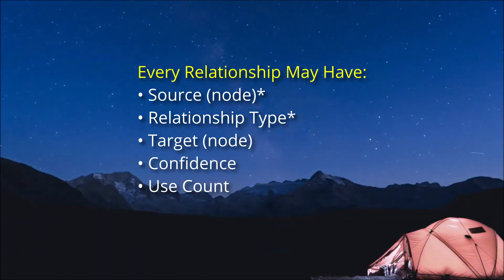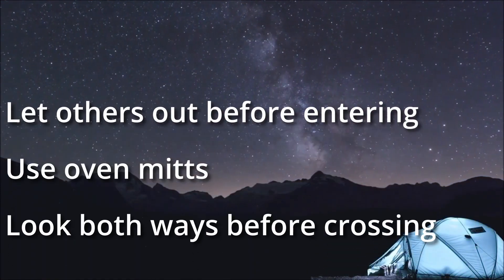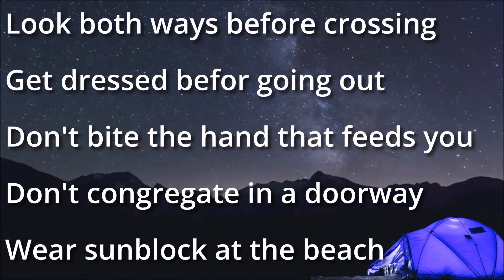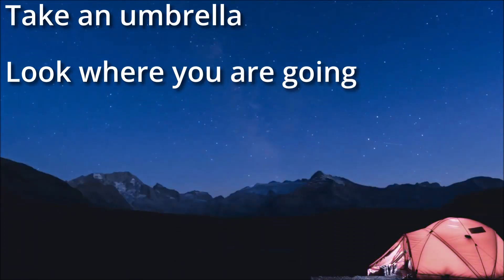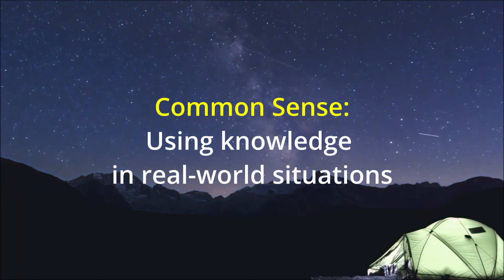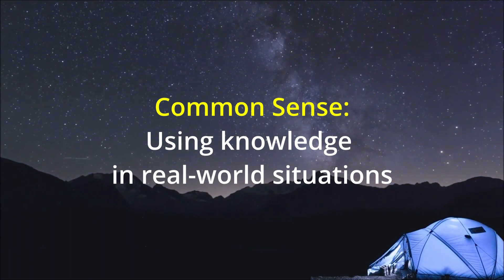What I call the use count is yet another value that must be available to every relationship in the graph. In the context of common sense, if you use a bit of information and the result is successful, your confidence will go up even more because common sense isn't about knowing stuff. It's about using what you know in real world situations.